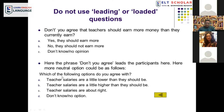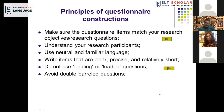Instead of leading questions, use neutral options. For example: 'Which of the following do you agree with? Teacher salaries are a little lower than they should be / a little higher than they should be / about right / I don't know.' Also avoid double-barreled questions — asking two questions at the same time in one survey item — as it would not be suitable for the participant to give an answer.